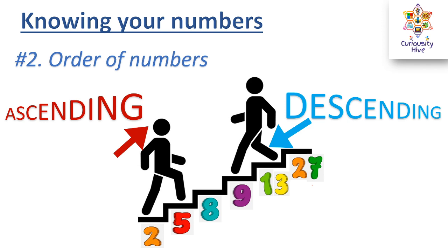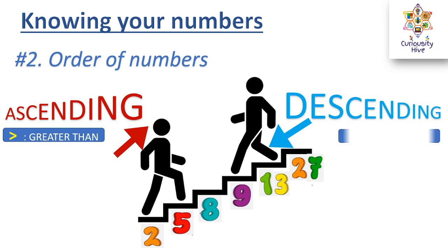In ascending order, the next number in the series is always greater than the previous number. In descending order, the next number in the series is always lesser than the previous number.